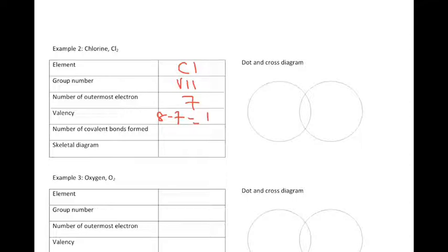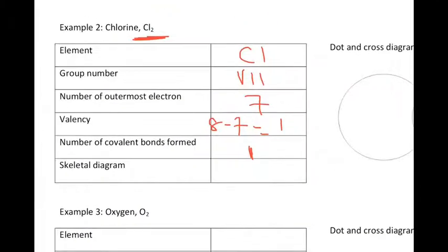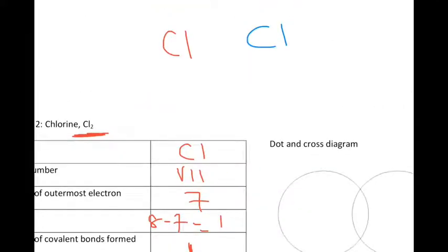Number of covalent bonds formed will be equal to 1. So when I'm drawing the skeletal diagram, I'm going to have chlorine — so there's two chlorine atoms: chlorine 1 and chlorine 2. They form one covalent bond, and each one is going to contribute one electron. So one electron from chlorine red and one electron from chlorine blue.